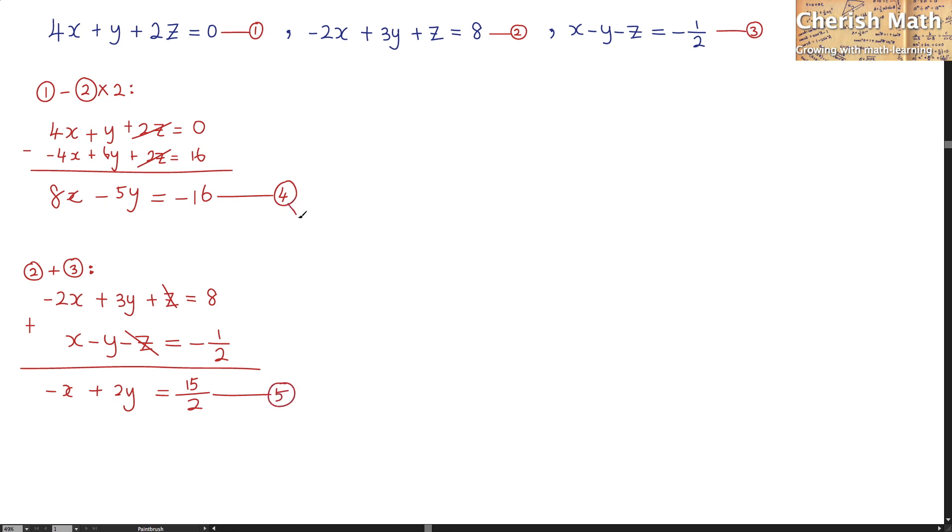And what I need to do is by using the fourth equation together with the fifth equation to solve for what is the value of x and the value of y. I am going to use the fifth equation multiplied by 8 and then minus the fourth equation. And that gives this as the entire workings.